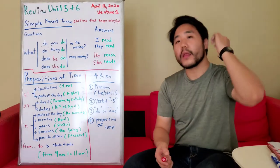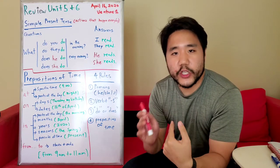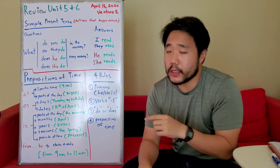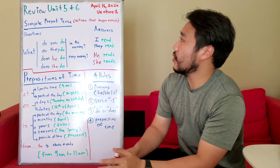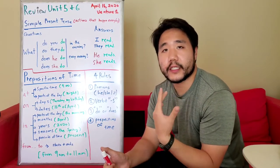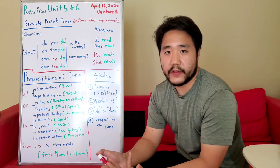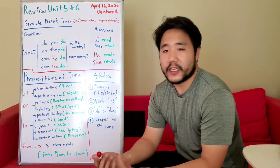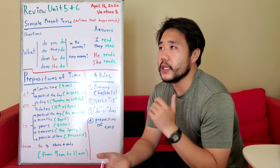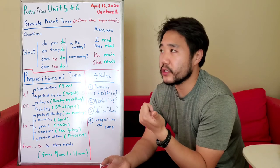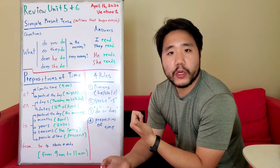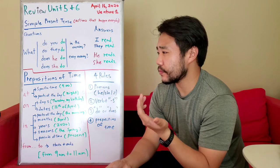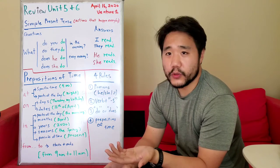In our previous video we finished reviewing unit 5. Now we're going to begin reviewing unit 6. Unit 6 is about daily activities and discussing daily activities with time. Examples of daily activities include: eat breakfast, eat lunch, wake up in the morning, take a shower, go for a walk, do the dishes, read a book, listen to music, watch TV, and so on.